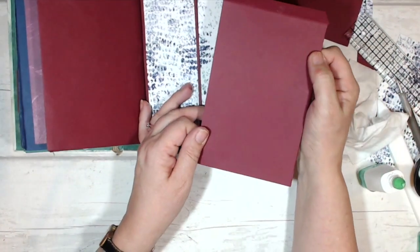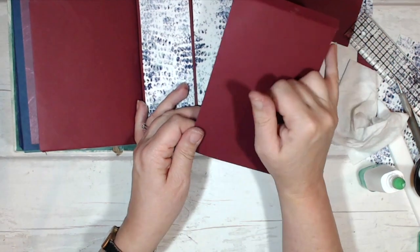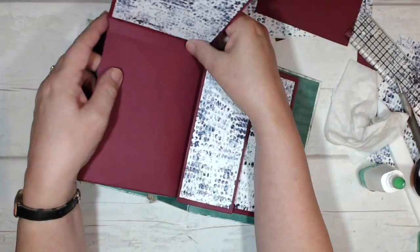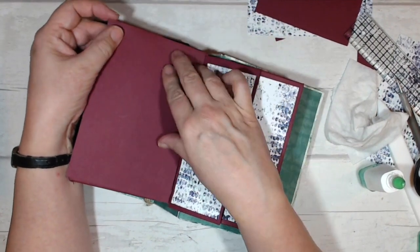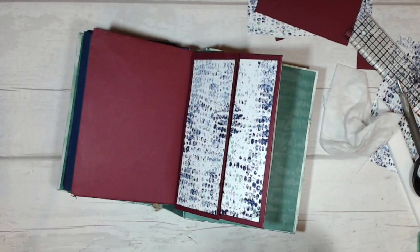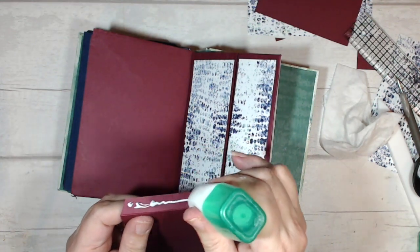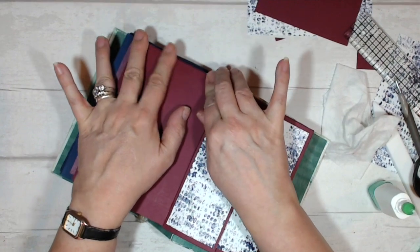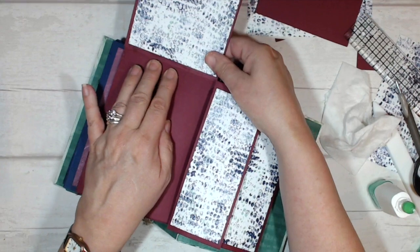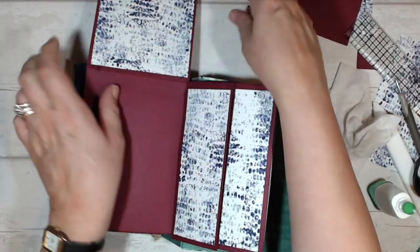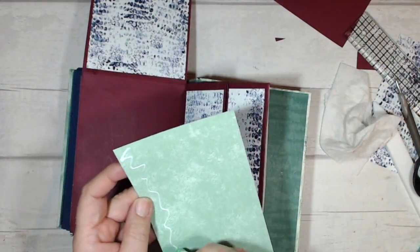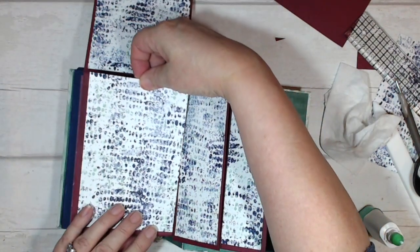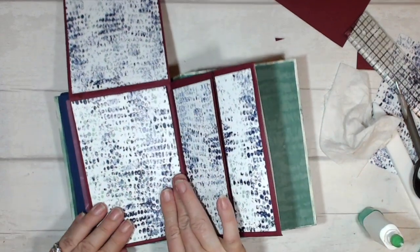So this is a piece of Merry Merlot, and it is four and a quarter by seven. And I've scored and folded it at half an inch. And as you can see, I've gone ahead and applied some paper DSP to one side. And I'm just going to glue that into place over here. I'm not too worried about the flap showing because I'm going to cover that in just a moment. Okay. Popping that into place. And now I have another piece of the same DSP, and that is going to cover that flap.